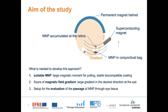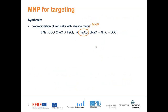Let us start with the magnetic particles. These particles are synthesized by a co-precipitation method. That means we have a mixture of different iron salts, from which we prepare a solution with acidic behavior. Then we add an alkaline media, and during this reaction between acid and alkaline, we have a precipitation and we obtain the magnetic nanoparticles in the form of iron oxide.